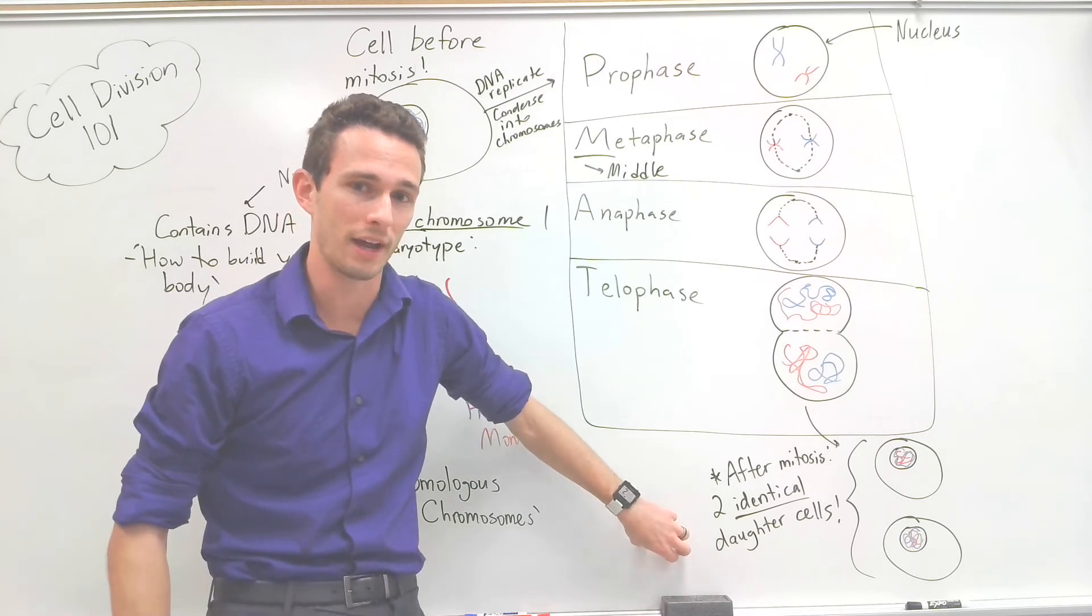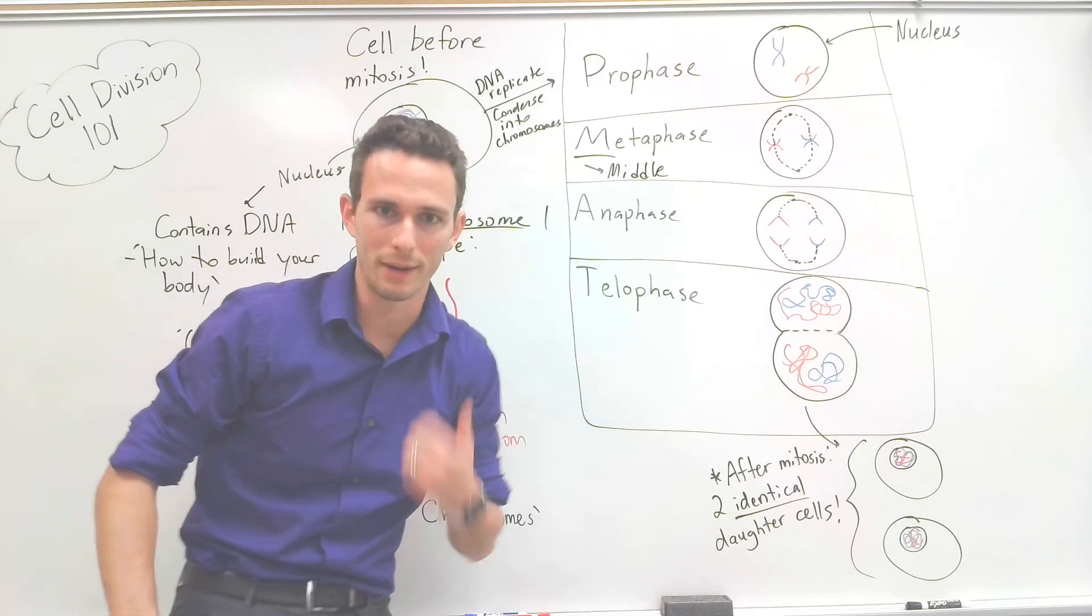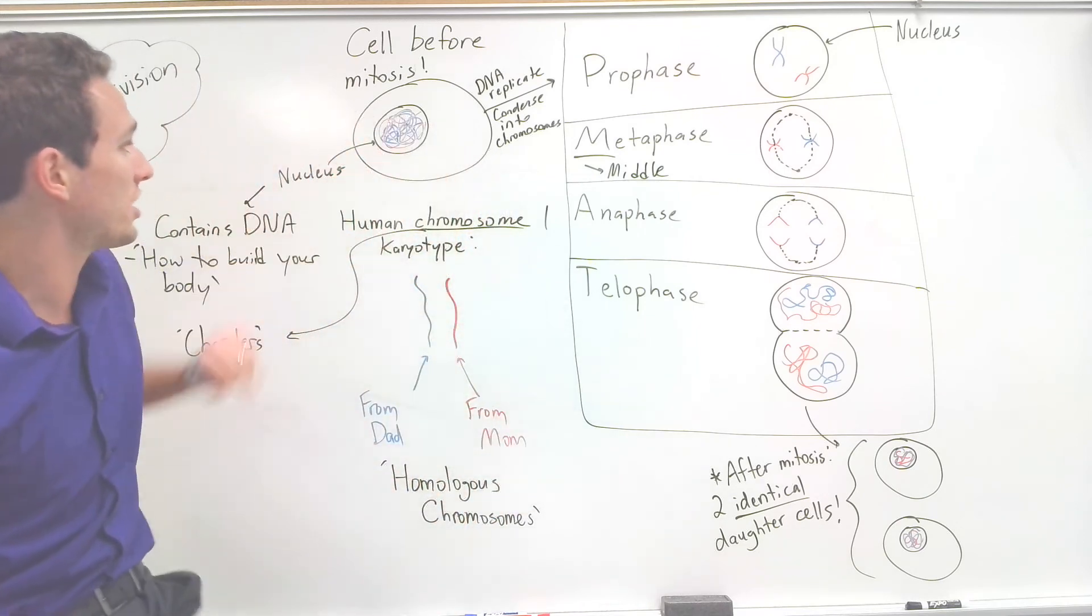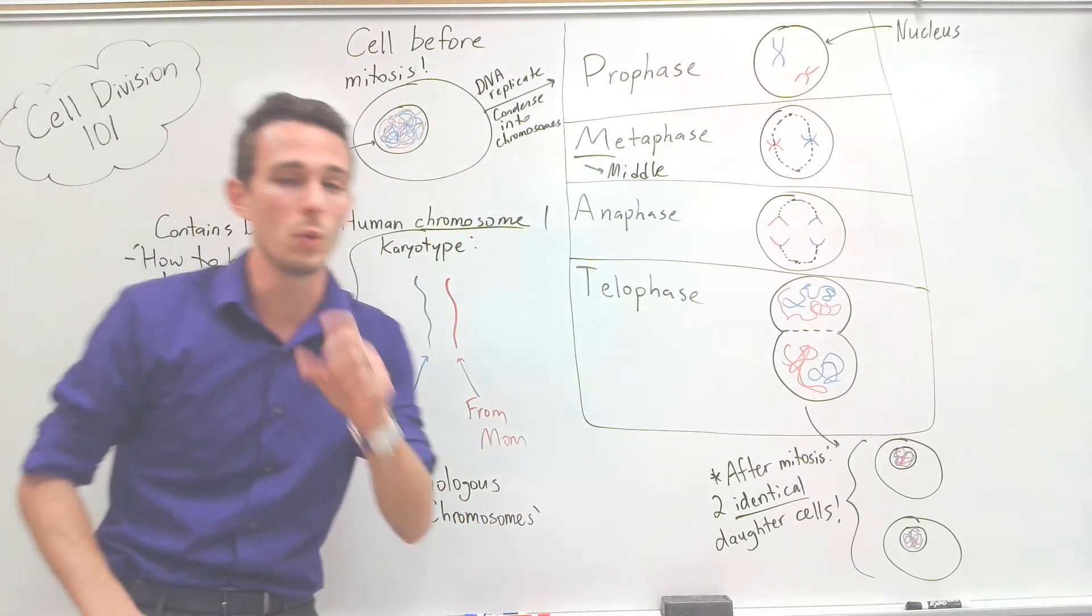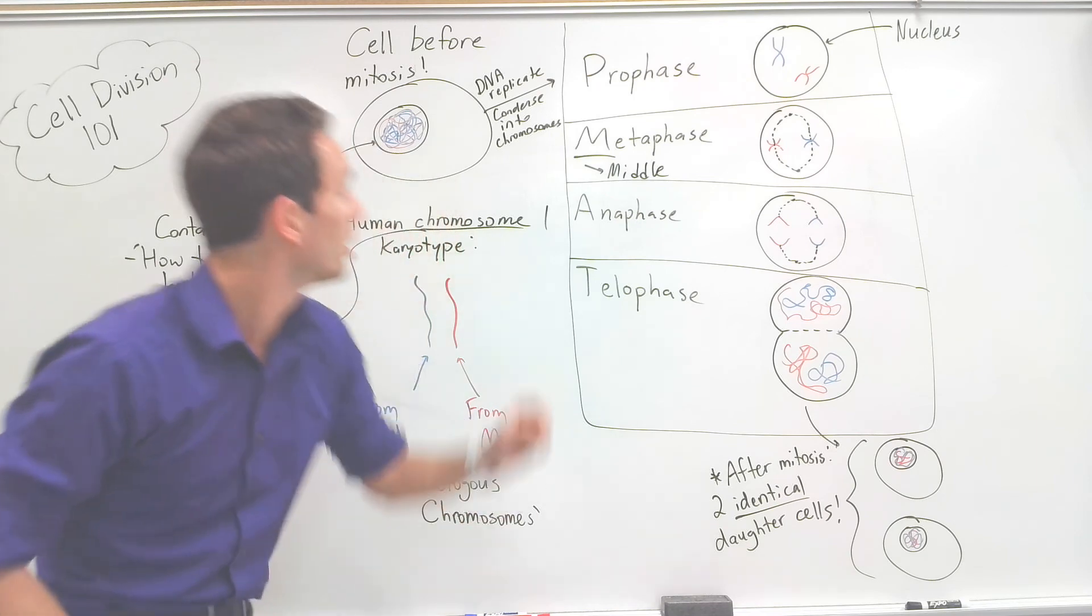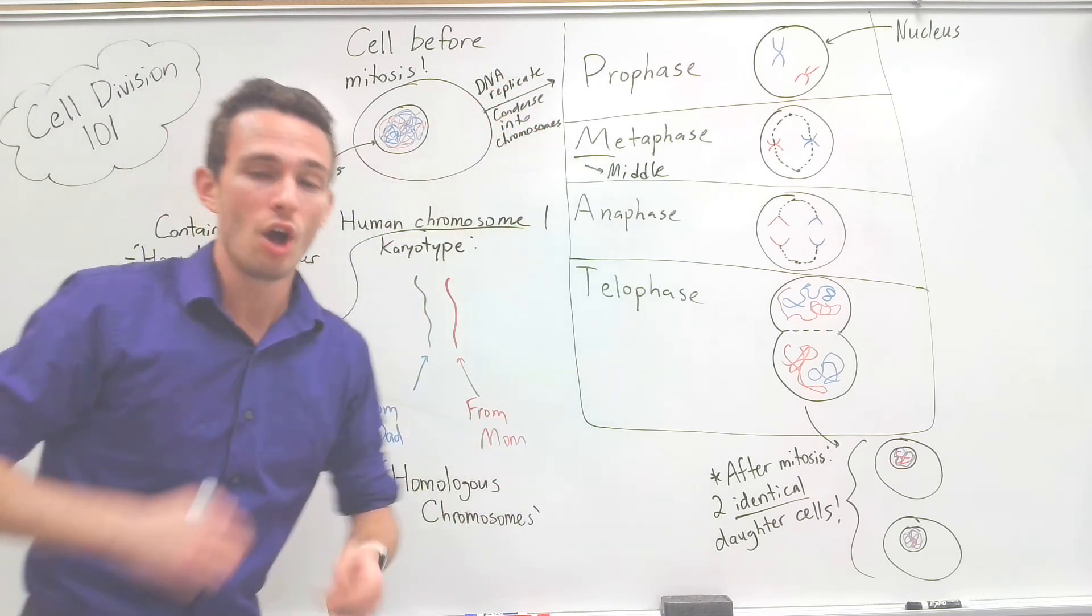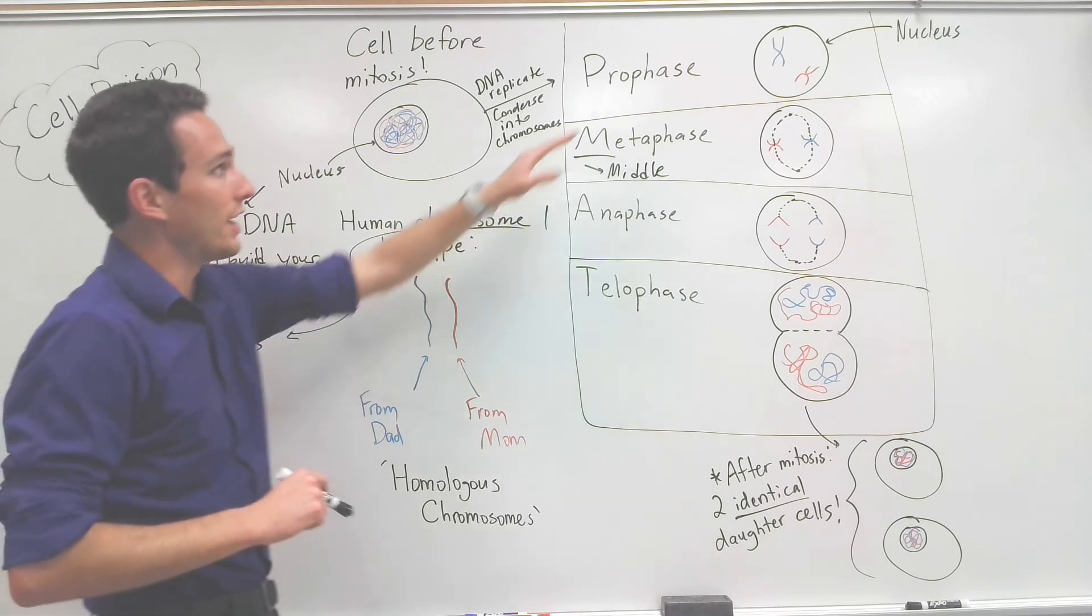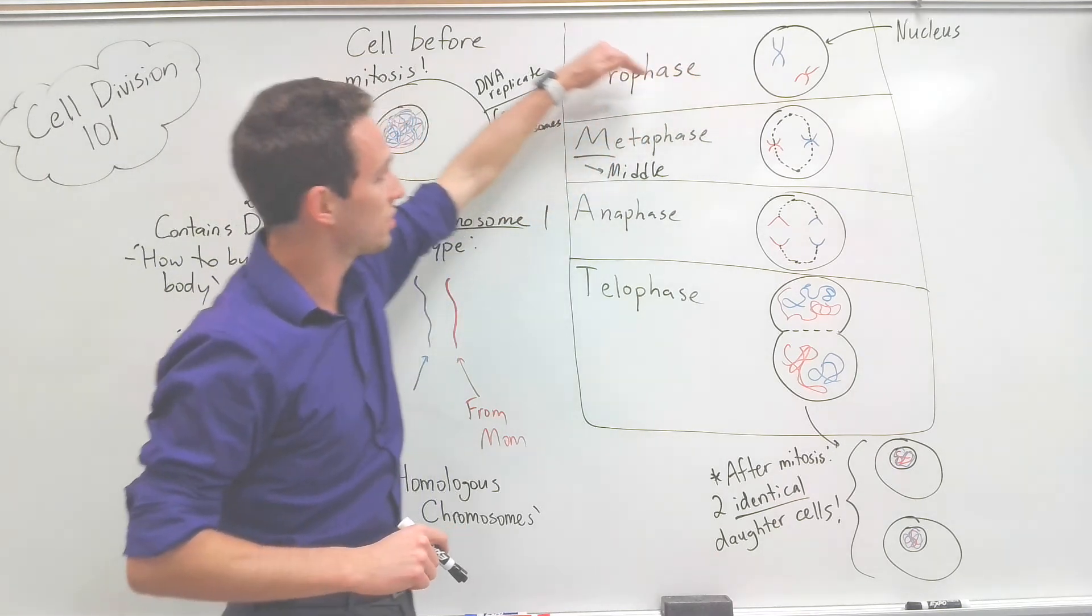So let's review that real quick. Mitosis: separating out the nucleus. The nucleus contains all the genetic information for this cell to function. We need to copy it. So we replicate the DNA, we wind it up onto chromosomes, we package them up really nicely, and now we go through mitosis.